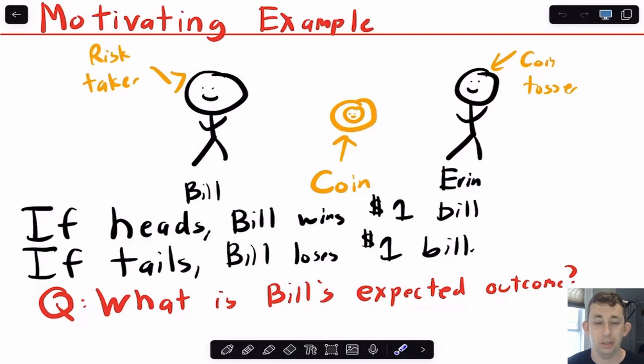In this motivating example, we've got Bill and Aaron. Bill is choosing whether to take a gamble, and Aaron is going to toss a coin. If the coin lands heads, Bill gets a dollar, and if it lands tails, Bill loses a dollar. So we might ask, what is the expected value of this gamble in terms of Bill's payoff?